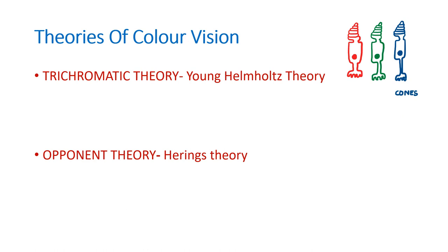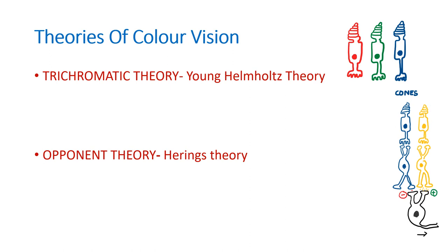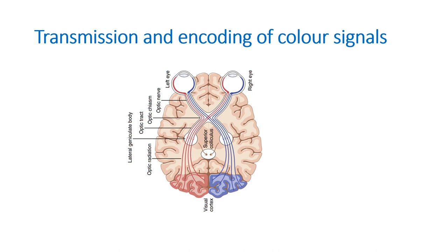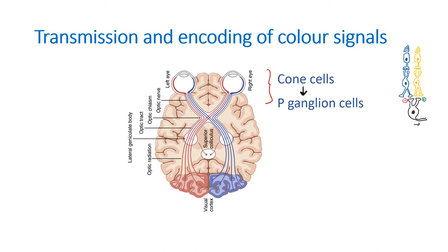The theories of color vision — trichromatic theory describing three cone types and opponent theory describing color opponent property from the ganglion cell onwards — are now clear. Regarding transmission and encoding of color signals: at the level of the eye, cone cells send impulses to the ganglion cells. It is specifically the P ganglion cells that are stimulated. From the ganglion cells, impulses pass via the optic tract and finally reach the lateral geniculate body (LGB).